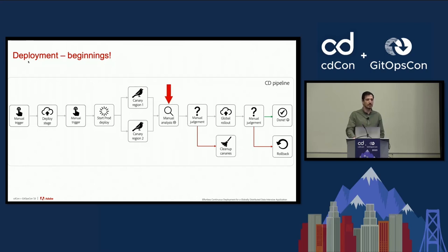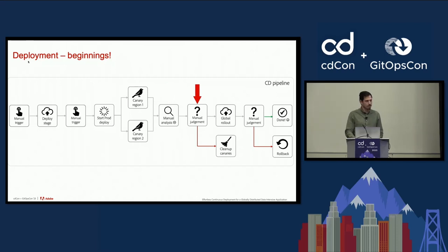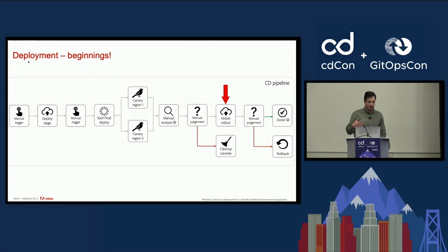The next step is an exhaustive manual analysis requiring close monitoring via Grafana dashboards of the canaries to establish if they are performing well, both functionally and non-functionally. Based on the results, the release engineer takes the decision to do the global rollout or not. Once the new version is running in all seven regions, a final post-release validation check is performed to make sure everything is in tip-top shape.